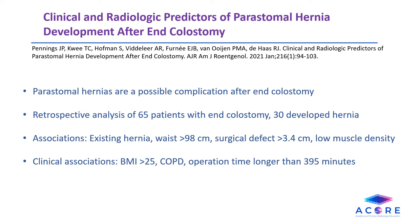This study looked at 65 patients with end colostomies for various reasons; 30 of them developed a peristomal hernia. Retrospective analysis looked at imaging and clinical features associated with development of a peristomal hernia. The presence of a pre-existing inguinal or abdominal hernia, large waist circumference, and large surgical defects were associated imaging findings, while BMI, COPD, and long operation times were also associated. COPD is thought to be associated due to increased coughing, which results in increased abdominal pressure.